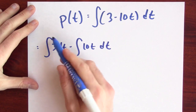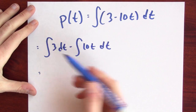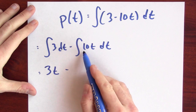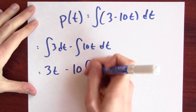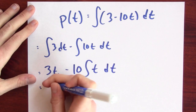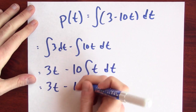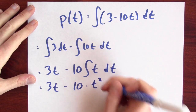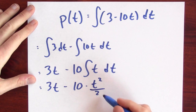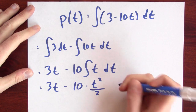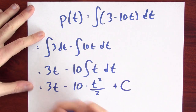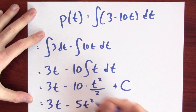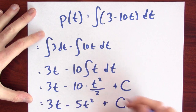I'd like to anti-differentiate 3. The antiderivative of a constant is just that constant times t. And what's an antiderivative of 10 times t? That's 10 times an antiderivative for t. So I've got 3t minus 10 times the antiderivative for t. By the power rule, an antiderivative for t is t squared over 2 — if I differentiate this, I get back t. Including a plus C, I can rewrite this as 3t minus 5t squared plus some constant C.